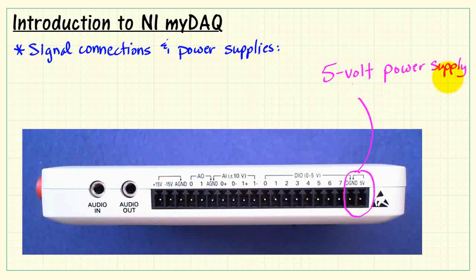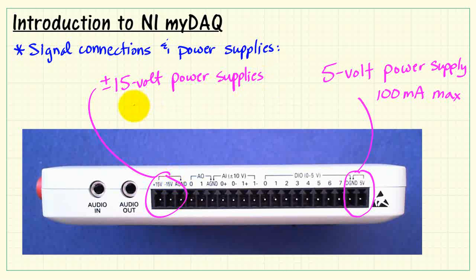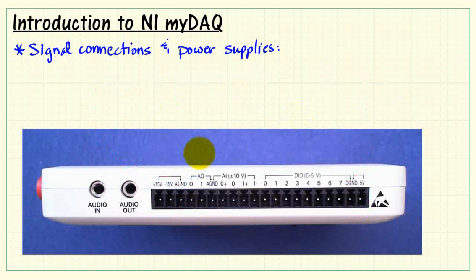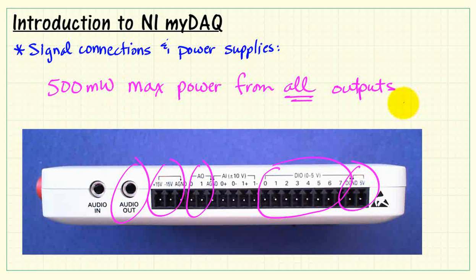We have a number of power supplies available. The 5 volt power supply can generate up to 100 milliamps. We have a plus-minus 15 volt power supply, and each of these can generate 32 milliamps. I should point out that since MIDAC is a USB-powered device, there is an overall limit on the amount of power you can extract from all of the outputs, and that number is 500 milliwatts. So from all outputs, that's your upper limit.